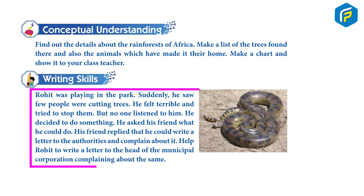Writing Skills: Rohit was playing in the park when he accidentally saw a few people cutting trees. He felt terrible and tried to stop them, but no one listened to him. He decided to do something and asked his friend what he could do. His friend replied that he could write a letter to the authorities complaining about it. Help Rohit write a letter to the head of the Municipal Corporation complaining about the tree cutting.